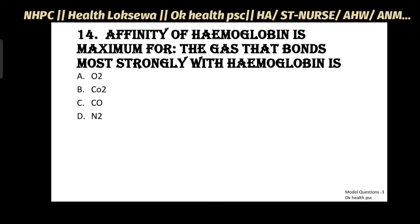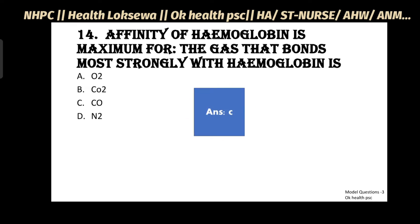Question No.14: Affinity of hemoglobin is maximum for the gas that combines most strongly with hemoglobin - O2, CO2, CO, N2. Answer: C - CO. Carbon monoxide has maximum affinity for hemoglobin.